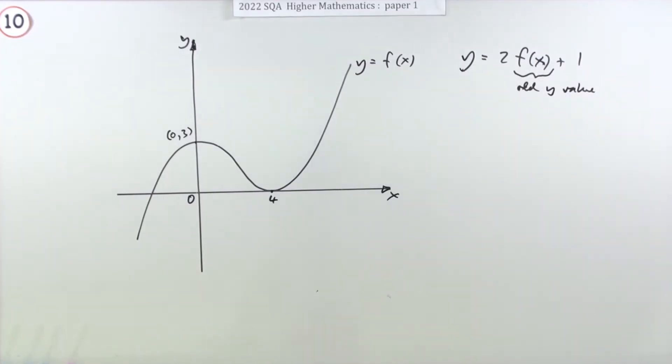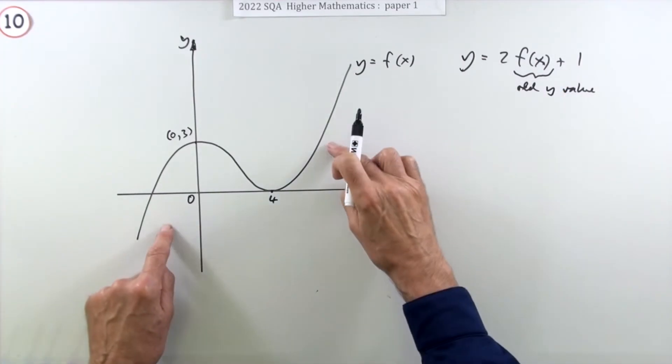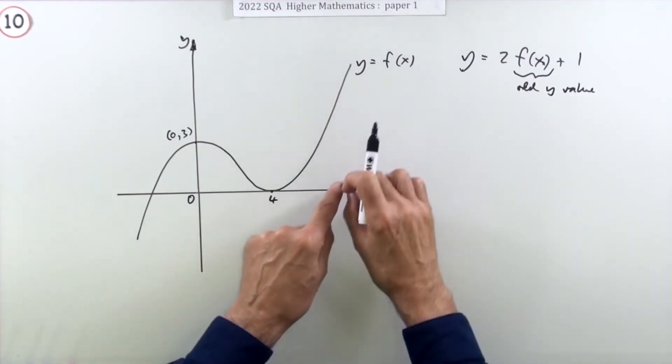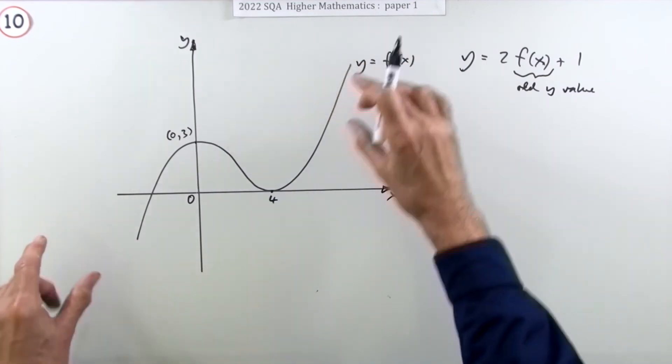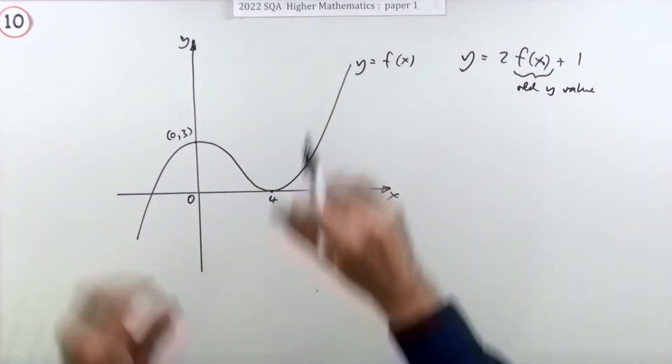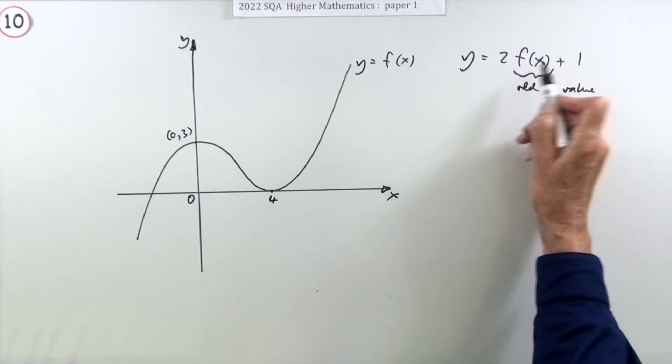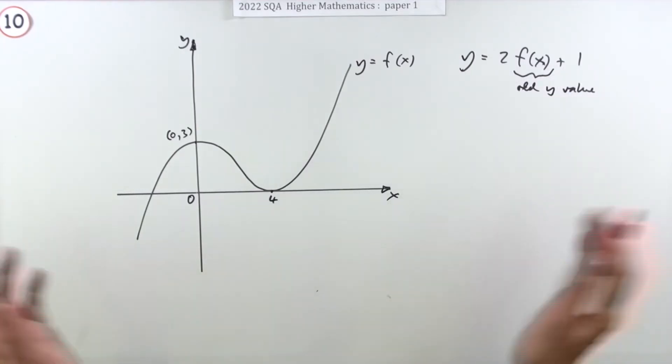In other words all the y coordinates here, these are the old y's, they'll all be doubled, whatever height they're at they'll go to double that height, and then everything wherever it ends up gets shifted up one. That's the correct order. Don't add on one first, you multiply before you add.